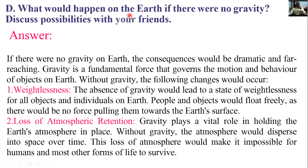What would happen on Earth if there were no gravity? If there were no gravity on Earth, the consequences would be dramatic and far-reaching. Gravity is a fundamental force that governs the motion and behavior of objects on Earth. Without gravity, the following changes would occur. Number one: weightlessness. The absence of gravity would lead to a state of weightlessness for all objects and individuals on Earth. People and objects would float freely, as there would be no force pulling them towards the Earth's surface.